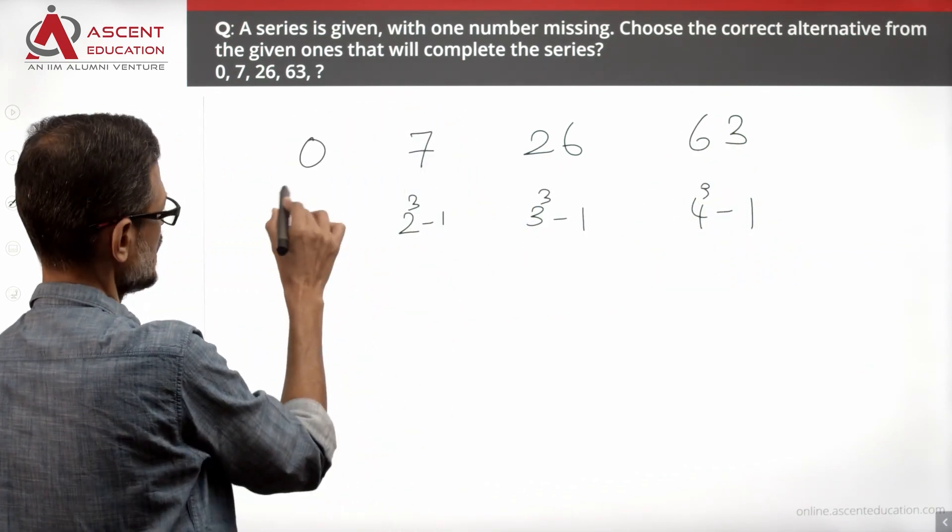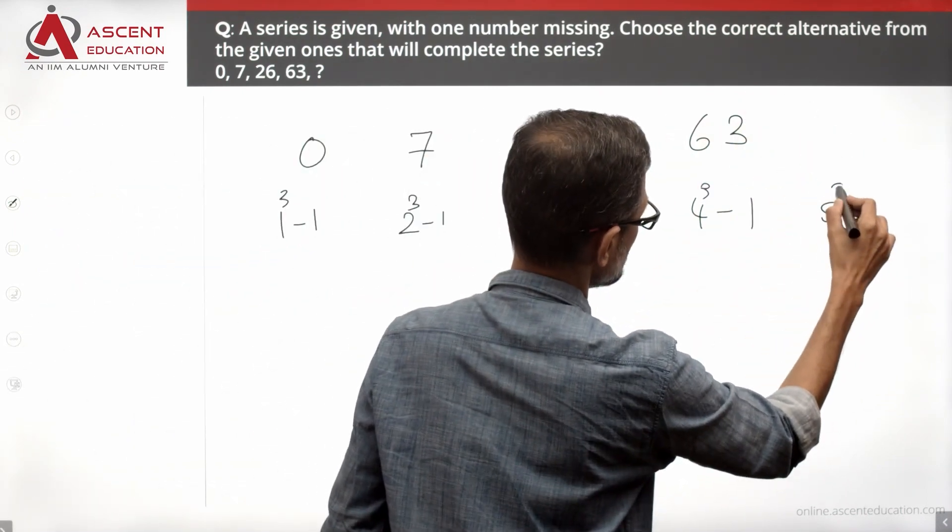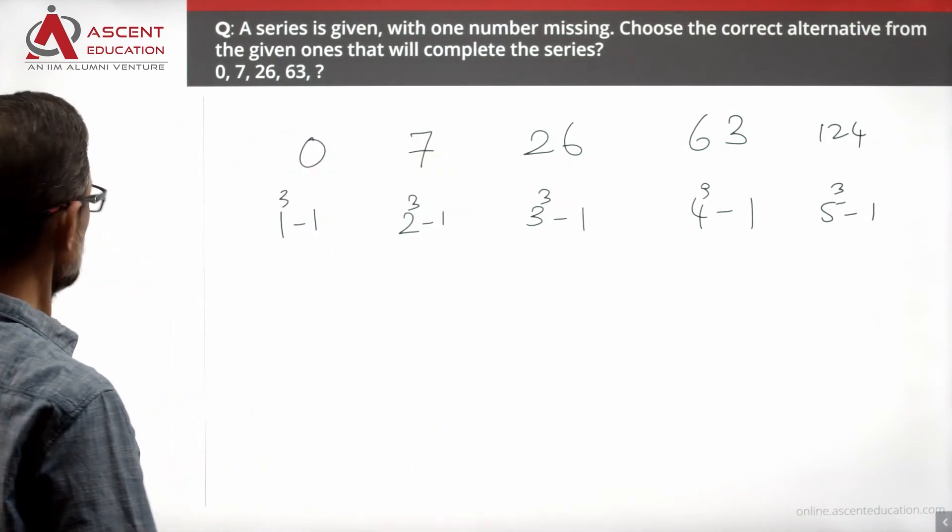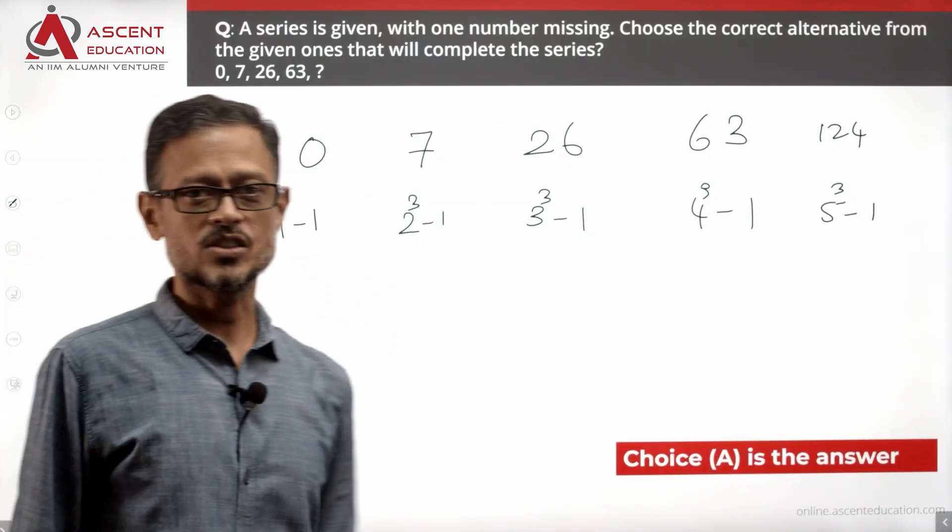This can be written as 1 cube minus 1. So the next number in the sequence will be 5 cube minus 1, which equals 124. 124 is choice A. Choice A is the correct answer to the question.